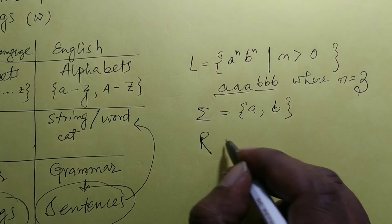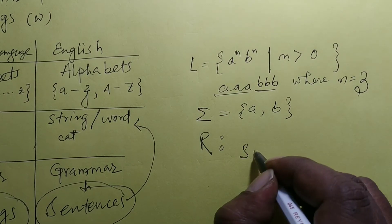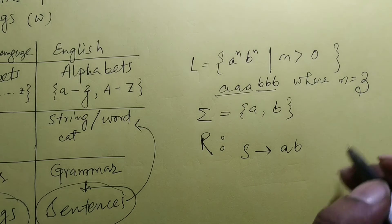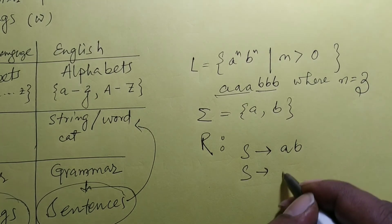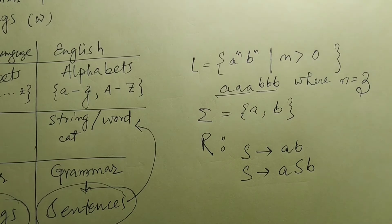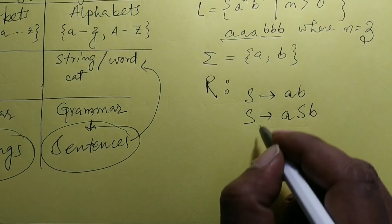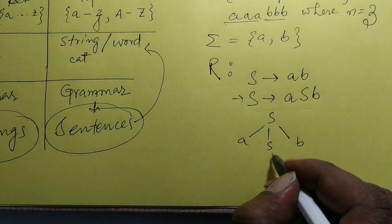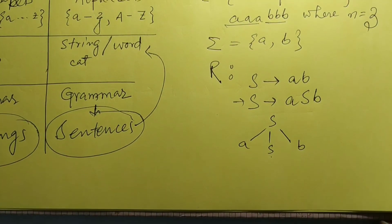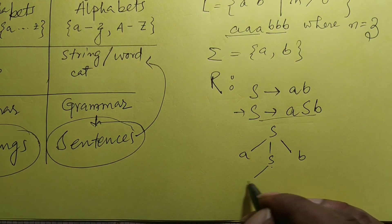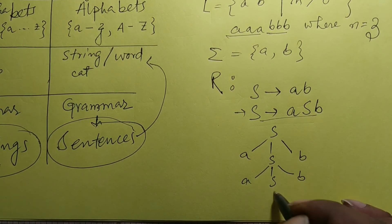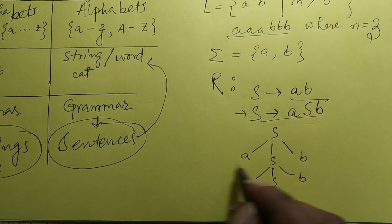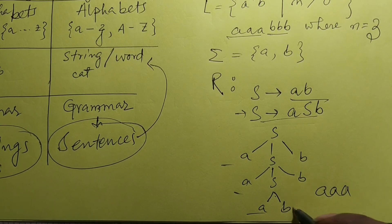We write that by R: S goes to starting symbol ab, and S goes to aSb. So when you expand, you start with this: S to aSb. Now this S can be replaced by this rule again, aSb, and so on, or I can terminate it by this rule ab. So aabbb is generated.